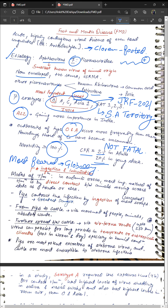The two primary modes of transmission are ingestion and inhalation of infected materials. In endemic areas, most susceptible animals catch infection by direct contact with infected animals moved across borders. Pigs generally contract infection by ingestion of infected meat scraps, and they can transmit the disease to cattle. From pigs to cattle, the disease spreads via movement of people, animals, and fomites such as abattoir waste, vehicles, and clothes of staff.